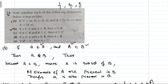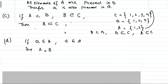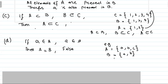Part D: If a belongs to set A and a belongs to set B, then set A equals set B. This statement is FALSE. Example: A = {a, b, c}, B = {a, b}. Element a belongs to both A and B, but A and B are not equal sets. So this statement is generally false.